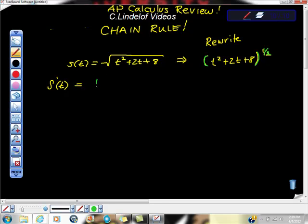And of course, the derivative of the outside function would be 1 half, whatever this thing is in here, and then 1 half minus 2 over 2 is negative 1 half.